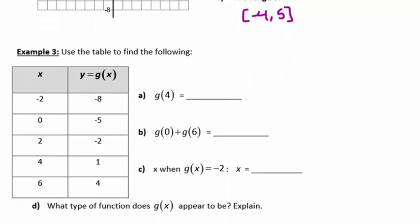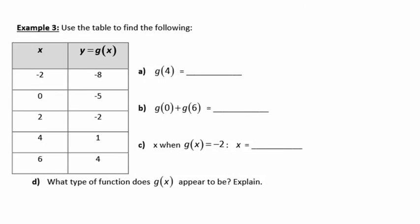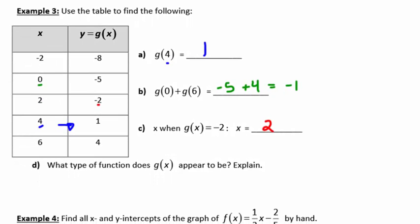In example 3, we want to use the table to find the following. So these questions are very similar to the questions we were asked about the graph. g of 4. 4 is the input, so 4 is going to be the x value. g of 4 is equal to 1. In the next one, g of 0 plus g of 6. g of 0 is negative 5 plus g of 6 is 4. So if you add those up, your value is negative 1. And find x when g of x equals negative 2. When g of x equals negative 2, I need to know the x value that goes along with that. So the x value that goes along with that is 2. So I can read a chart to determine function values.